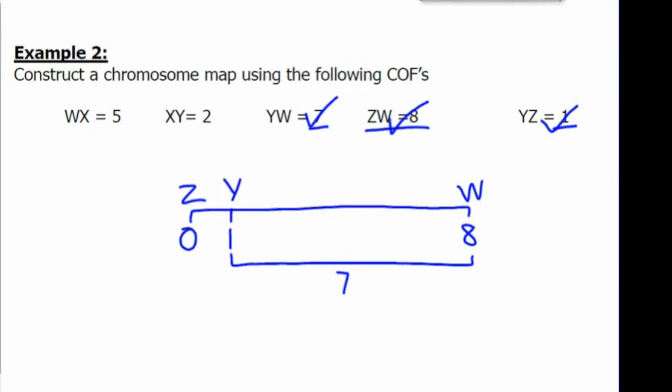Next we'll look at X. X is 5 away from W and 2 away from Y. So if we place it at 3, then it is 5 away from W.